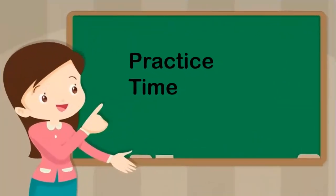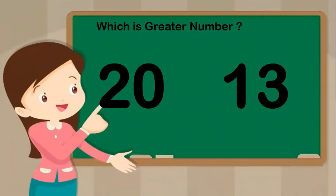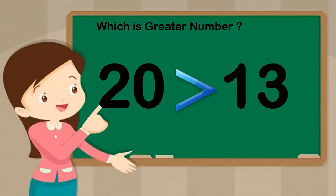Now it's practice time! I will give you two numbers and you will compare and tell me which one is greater. Here are number 20 and number 13. Think and tell me — which one is greater, 20 or 13? Yes, you are right! It's number 20. Twenty is a bigger, greater number. So Ellie's mouth will open towards 20.